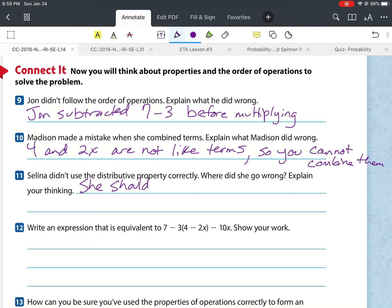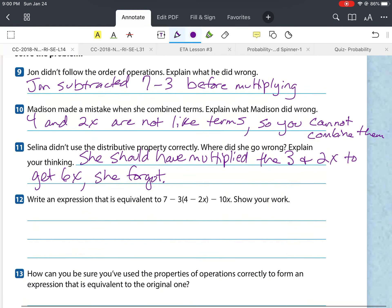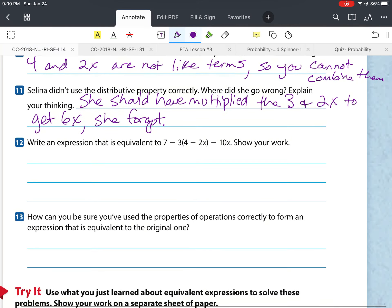Number 11, it says, Selena didn't use the distributive property correctly. Where did she go wrong? Explain your thinking. She should have multiplied the 3 and 2x to get 6x, which she forgot.